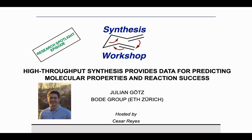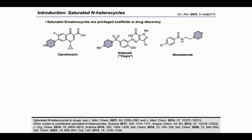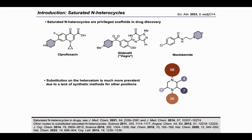Today I will be introducing our recent publication: 'High Throughput Synthesis Provides Data for Predicting Molecular Properties and Reaction Success.' When we look at existing drugs, one scaffold that keeps popping up is saturated N-heterocycles. This scaffold provides some very useful properties to molecules in the context of drug discovery. However, as you can see in these few examples, the diversity of how we attach these saturated N-heterocycles is quite limited due to limitations in the chemistry to access this scaffold. The analysis shows it's really imbalanced, because it's much easier to substitute on a nitrogen than on a carbon.